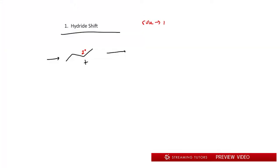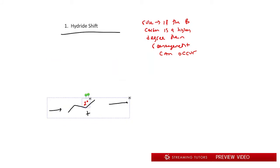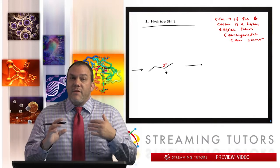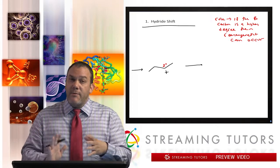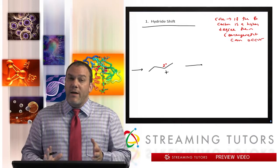Notice that the carbon that's positive is secondary. Here's the golden rule: if the beta carbon is a higher degree, then rearrangement can occur. The idea about this is that when you have a carbocation, if the neighbor is a higher degree, then the positive carbon would prefer to be there.